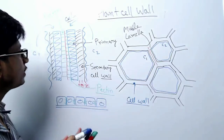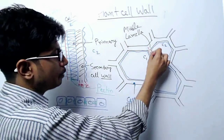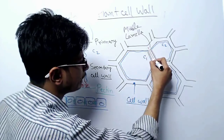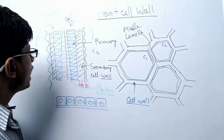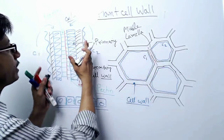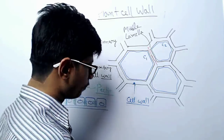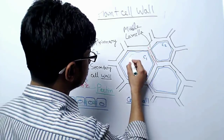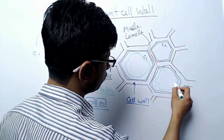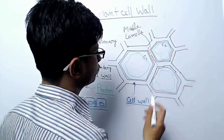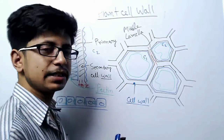Zooming into this area, we find the middle lamella connecting with primary walls from both sides, with pectin acting as the attachment polysaccharide. Then we have the secondary walls on both sides, and finally the membranes. In a plant cell, most of the volume contains the vacuole, with a smaller region containing the nucleus, and the cytosol surrounds everything — that is the overall structure of plant cells.